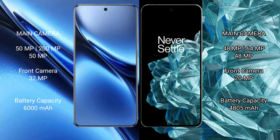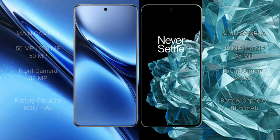The Vivo X200 Pro has a rear triple camera setup: 50 MP plus 200 MP plus 50 MP, with a 32 MP front camera. The OnePlus Open has a rear triple camera setup: 48 MP plus 64 MP plus 48 MP, with a 20 MP front camera. The Vivo X200 Pro has a 5800 mAh battery with 90W fast charging support, while the OnePlus Open has a 4805 mAh battery with 67W fast charging support.